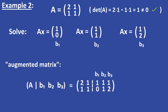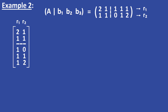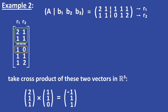Now we rewrite these three linear systems by using an augmented matrix. We take the rows of this extended matrix and write them down — this is row 1 and this is row 2. We highlight a 2x2 submatrix and pick the first row right under the submatrix. Now we have to take the cross product of these two highlighted vectors in R3.